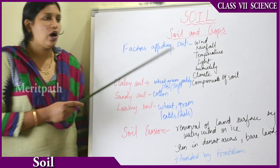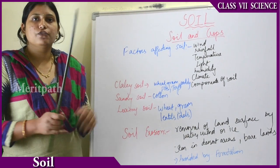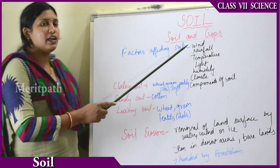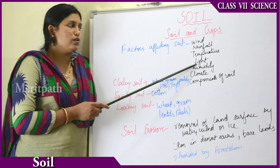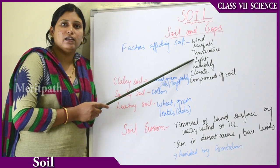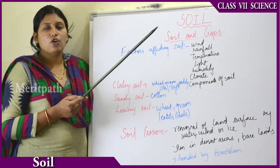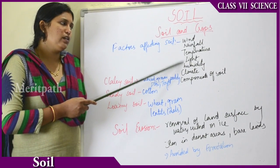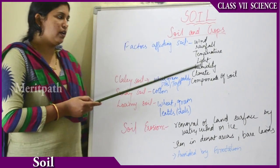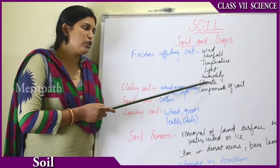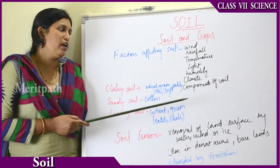Soil and crops — how does soil relate to crops, and what factors affect soil? Wind: if wind flows heavily, the uppermost layer of soil will be washed off. Rainfall and floods also wash off the top layers. Temperature: excessive heat causes the moisture content of the soil to evaporate as water vapor. Light and humidity also affect soil — if there is no moisture, the soil goes dry. Various climatic conditions and the types of plants growing in the soil all affect it.